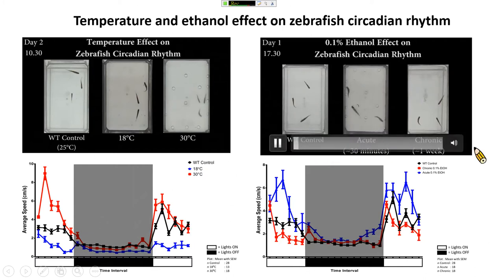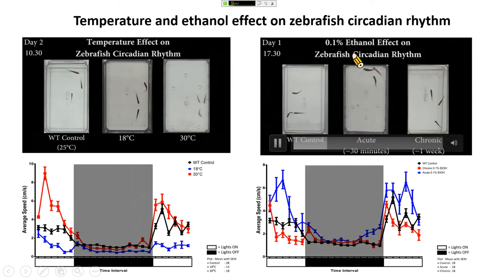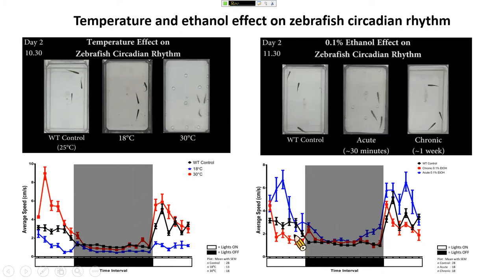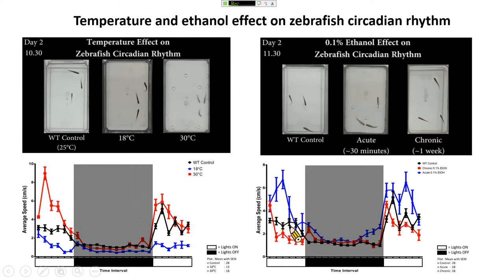The right panel shows the environmental pollution effect. This is the control fish, this is acute exposure to 0.1% ethanol, and this is chronic exposure to ethanol. After quantification, we found that at 1.1% ethanol the acute exposure has a stimulating effect on behavior. But after chronic exposure, the fish may have already adapted, showing a decline in locomotion activity. So the circadian rhythm is associated with both temperature and environmental conditions.